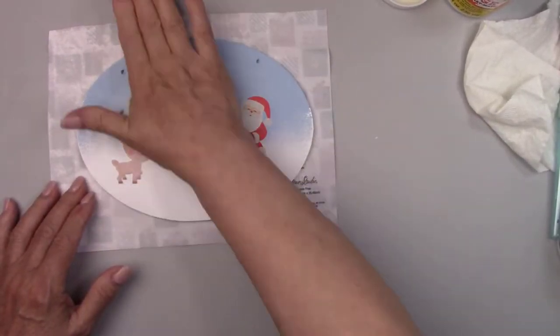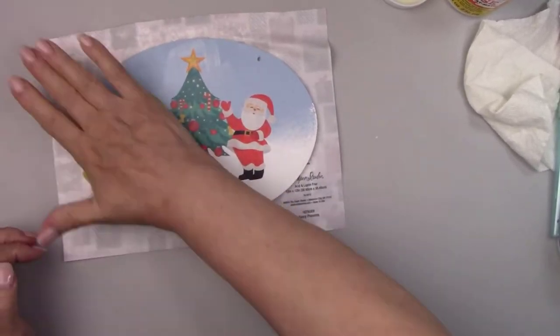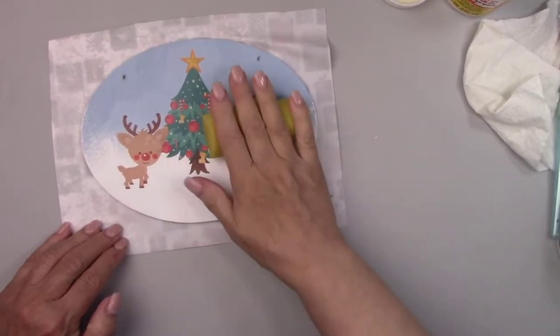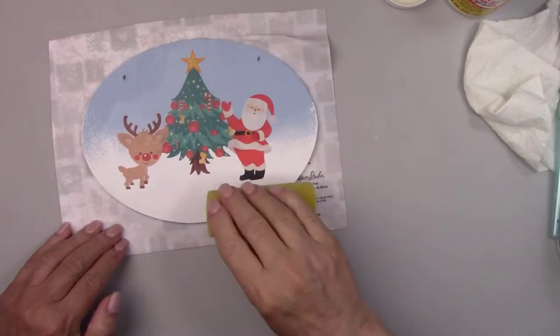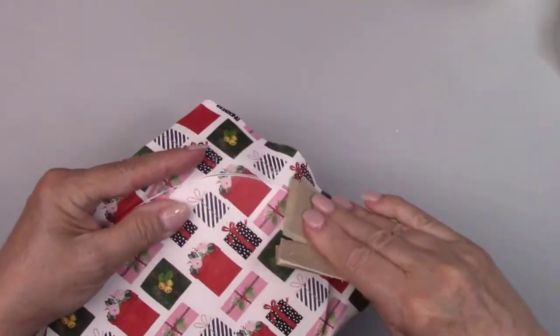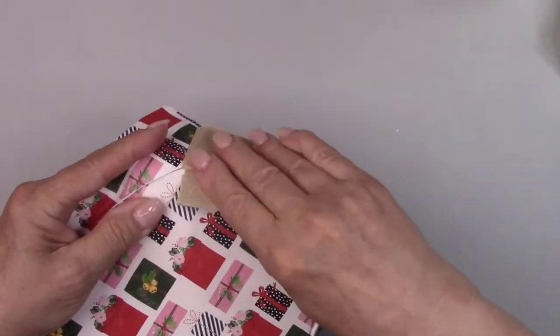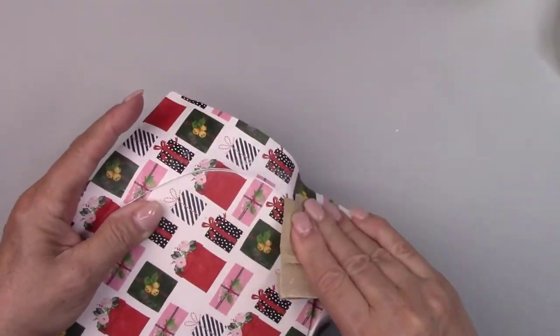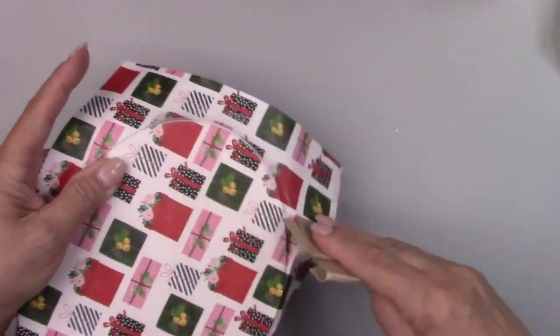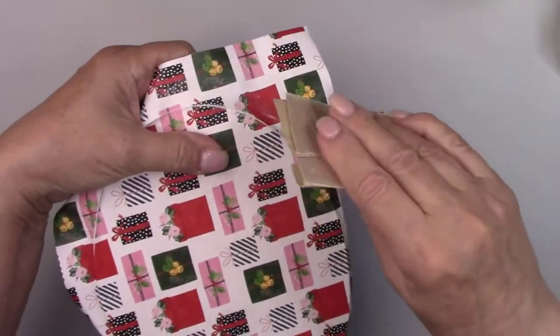I'm rolling the sponge over them again to remove any air bubbles. Now that the paper is dry on the back, I'm taking a piece of sandpaper and going along the edge. This gives you a nice clean cut on the edge of the board.